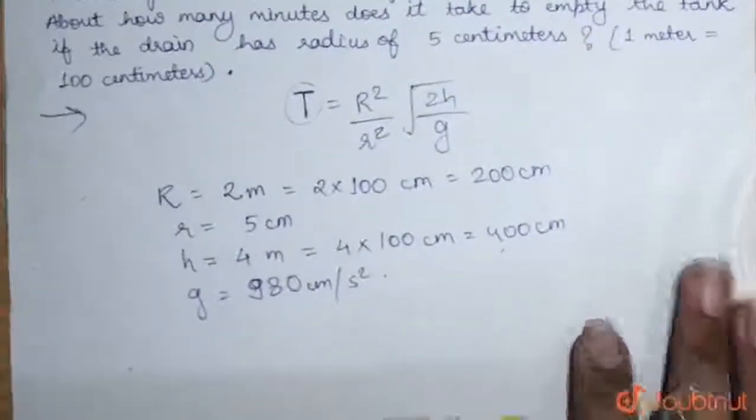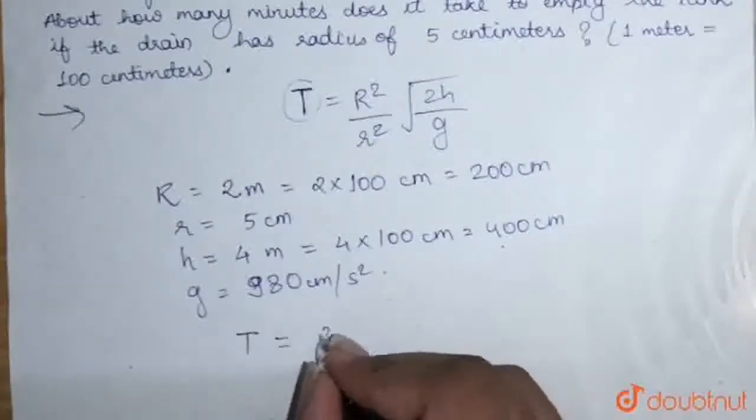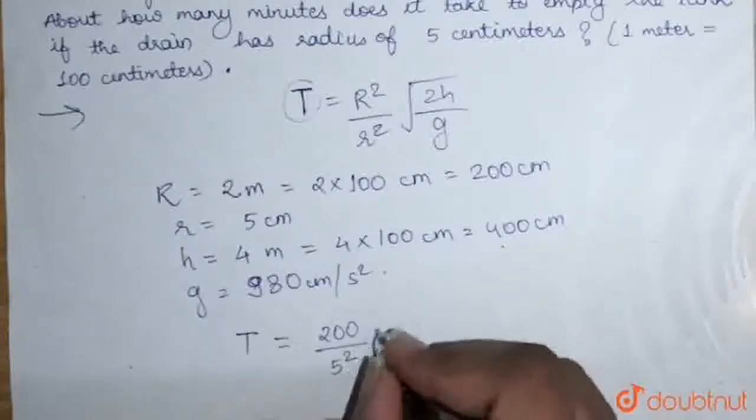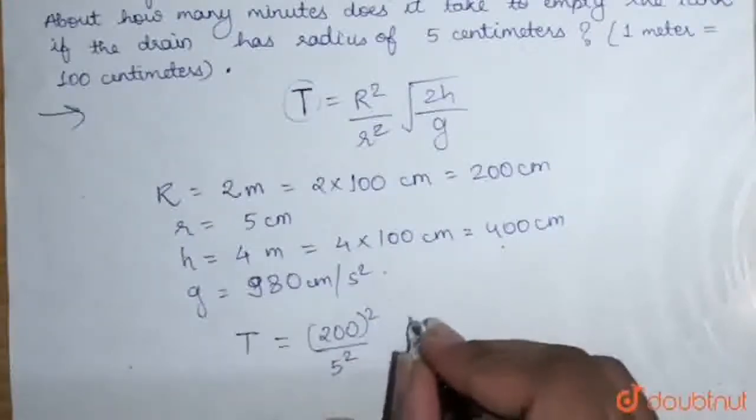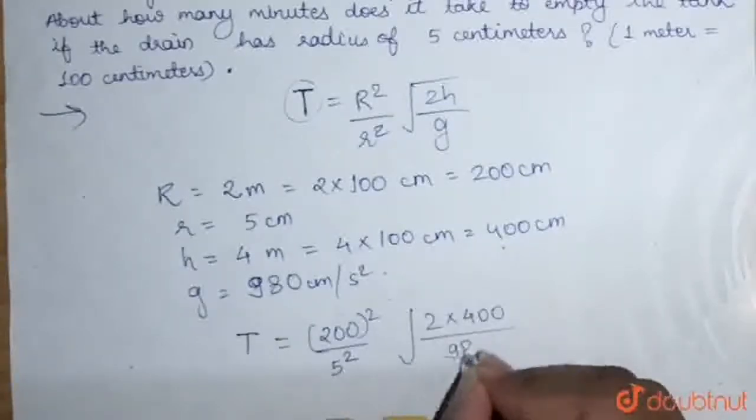That is, 200 squared upon 5 squared, under root 2 times 400, upon 980.